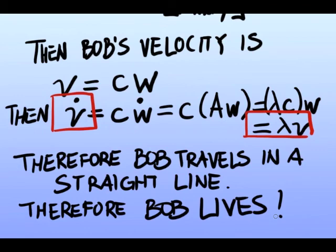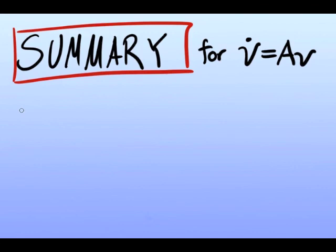Let's summarize. For the state-space equation V dot equals AV, right eigenvectors are initial conditions which will create straight lines. Left eigenvectors are linear combinations of any initial conditions which will create straight lines.